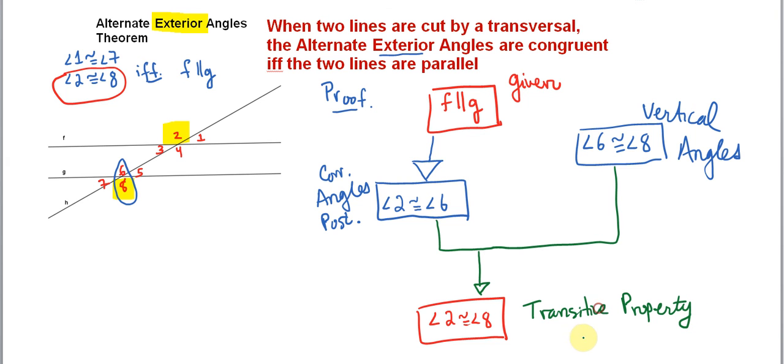It is the transitive property that allows us to say this. There you have it—this completes the proof of the alternate exterior angles theorem.